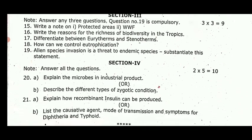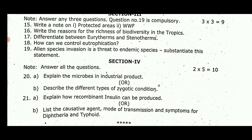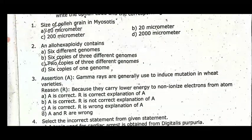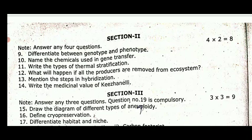Five-mark questions include: explain the microbes in industrial products; describe different types of psychotic conditions; explain how recombinant insulin can be produced; list out the causative agents, mode of transmission, and symptoms of diphtheria and typhoid. Additional questions: difference between genotype and phenotype; name chemicals used in gene transfer; types of thermal stratification; what happens if all producers are removed from the ecosystem; types of hybridization; medicinal value of keelannelli — androclop paniculate and malavayembu.